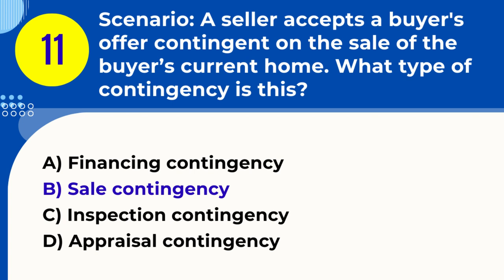Explanation. This is a sale contingency where the buyer's ability to purchase the property is contingent upon them selling their current home. This type of contingency allows the buyer to avoid owning two properties simultaneously.